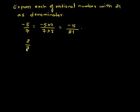The next rational number we have is 2 upon 3. So 2 times 7 upon 3 times 7. Therefore, 3 times 7 is 21, and 2 times 7 is 14.